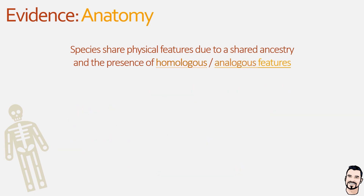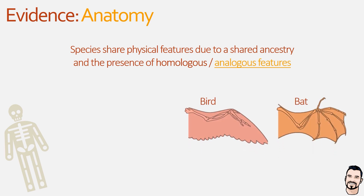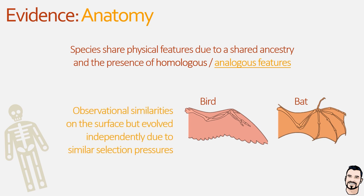Turning to analogous features, they appear similar in different organisms but not because of a common ancestor. They will have observational similarities but will have evolved separately due to similar selection pressures. For example, the wings of birds and bats both provide flight, but there are major differences in anatomical layout — birds have feathered wings whereas bats do not. These differences suggest the two types of wings were not inherited from a common ancestor and evolved independently, as flight provided some form of selective advantage.